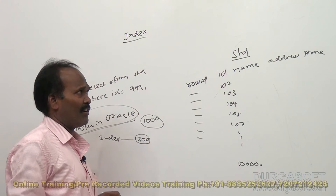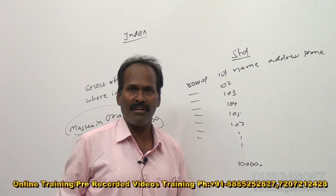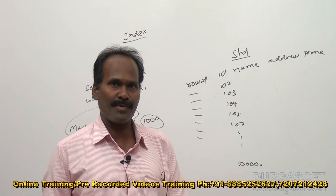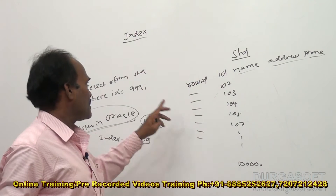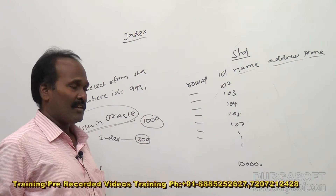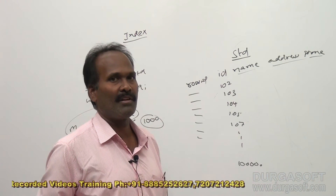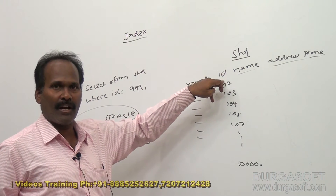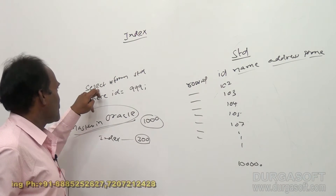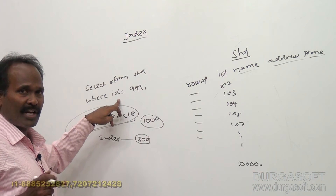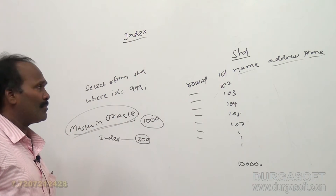For which columns should we create an index? In the student table we have 4 columns: id, name, address, and phone number. We have to create an index for the columns which we are going to use frequently. If I create an index for name, address, or phone column, but I am frequently querying by id, then there is no use of those indexes. We have to create the index for the column we use frequently to ask for information from the database. In this case, we create an index for the id column because using id we can retrieve records uniquely.